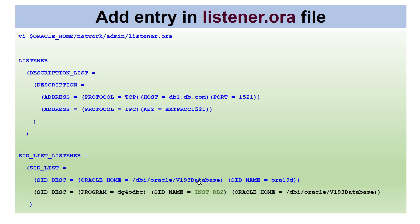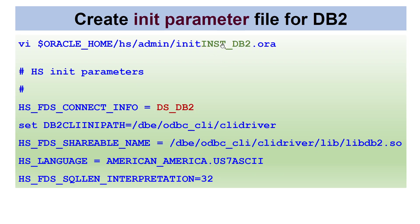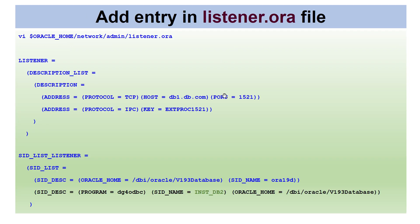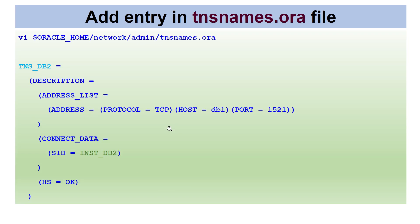The SID from the init parameter file — inst_db2 — is what you register in listener.ora using dg4odbc and the oracle home. Once the static registration in listener.ora is done, reload or restart the listener.